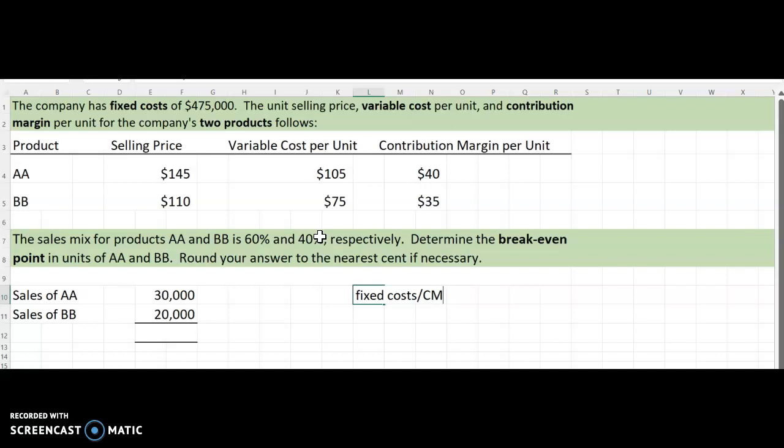For example, here we sell product AA and product BB. We have to get the contribution margin for both of these products together. In this situation, they tell you that AA is 60% and BB is 40% for sales mix. But they don't always give that to you, so I want to show you how to calculate it if they didn't tell you that.